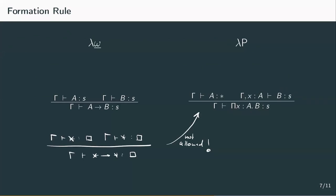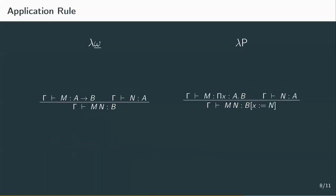The other two rules are a bit easier to adjust. In the application rule, we just need to replace the arrow A to B in the first premise with a pi type. So if we have a term M of the dependent type pi X of type A dot B, and another term N of type A, we can conclude that the application of M to N is of type B, where each X is substituted by N.